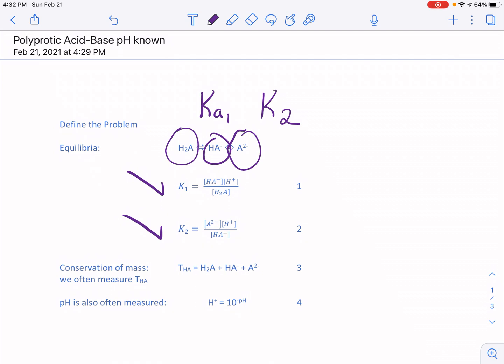Like monoprotic systems, we have to have conservation of mass, and so total HA is the sum of all of the acid species and their conjugate basic forms. So we have H2A, HA-, and A2-. If you have a hexaprotic acid system, there would actually be seven species that you'd have to consider. And then finally, we still know the pH. So H+ is equal to the negative log of the pH.